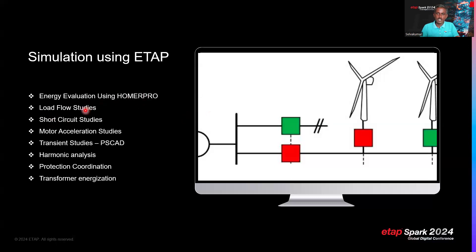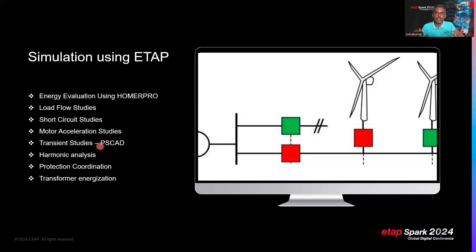Beyond energy evaluation, the technical feasibility of the solutions must also be validated — meaning how the system technically functions under all conditions. This requires load flow studies, short circuit studies, motor acceleration studies, and transient studies. To capture the dynamic behavior of the wind turbine generator as well as the battery energy storage system, ETAP plus PSCAD co-simulation provides optimal results.